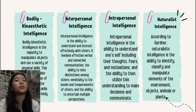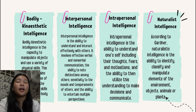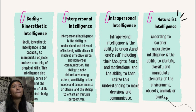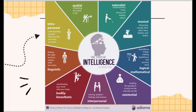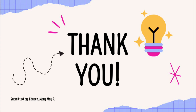According to Gardner, naturalist intelligence is the ability to identify, classify, and manipulate elements of the environment — such as objects, animals, or plants. Naturalist intelligence refers to understanding living things and reading nature. You can refer to the chart for more details. And that's all — thank you for listening.